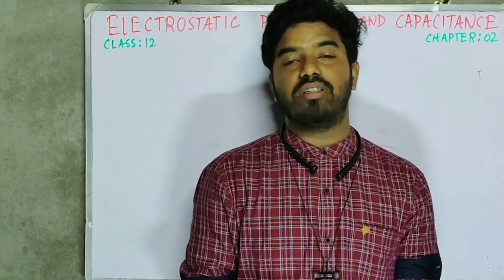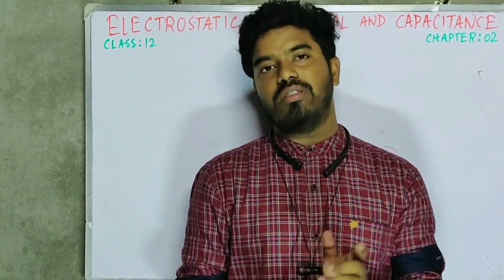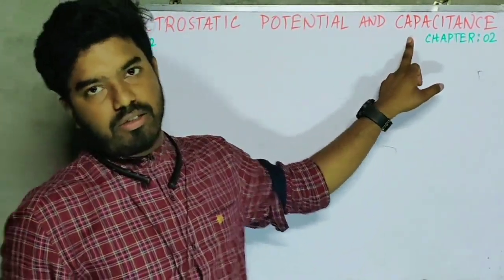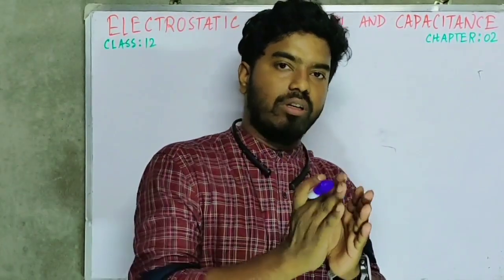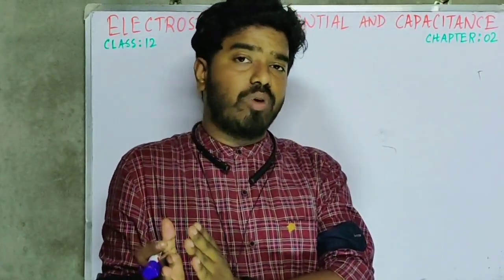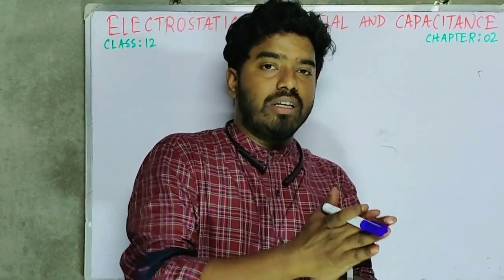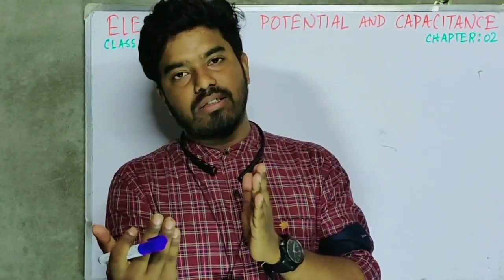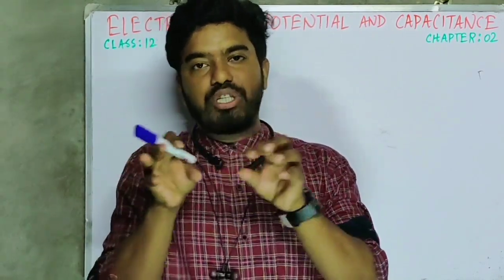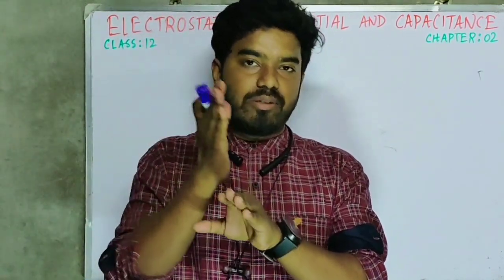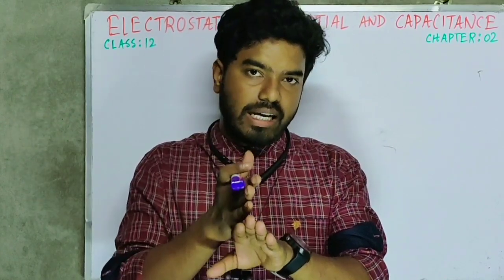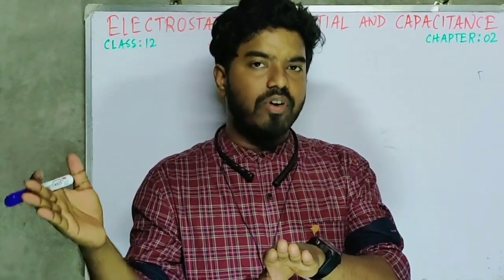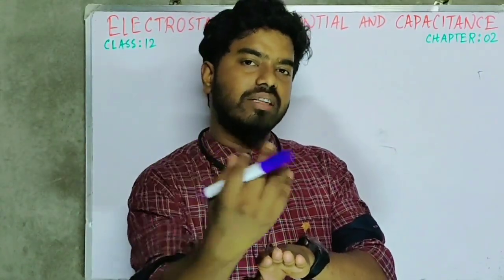Hello students, today we will discuss Chapter 2 for Class 12, that is Electrostatic Potential and Capacitance. Before starting, let's recall what we learned in Chapter 1: electric charge and its properties, electrostatic force between two charges, electric field, electric field lines, electric dipole, Gauss's theorem, and its application for finding electric field for various configurations.